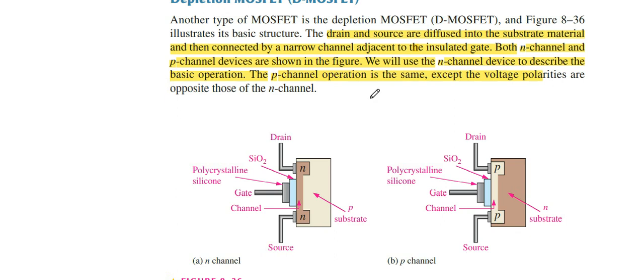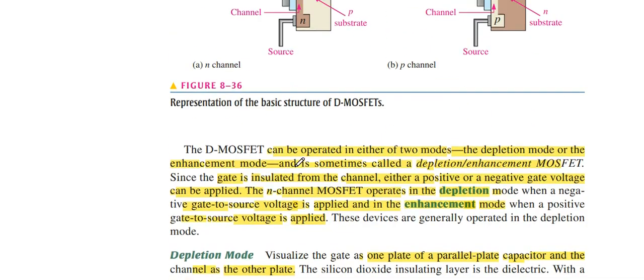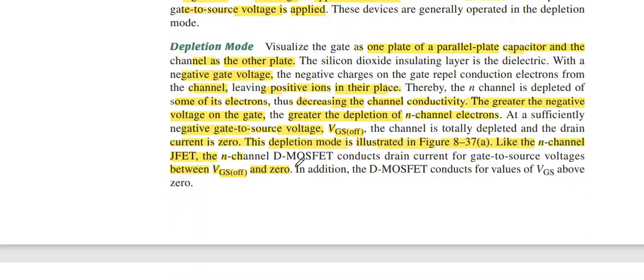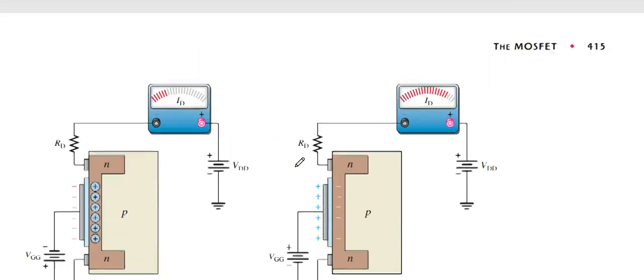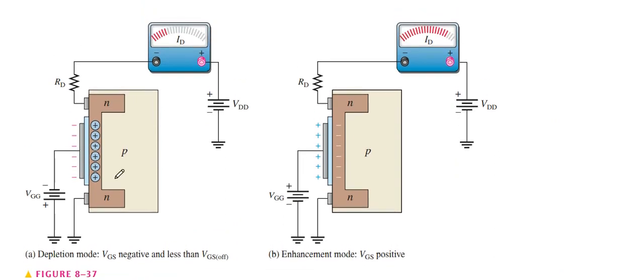N-channel current diffuses or spreads from drain to source or source to drain. How we can operate it in D mode: the gate is negatively connected or VGG. Drain to source is always oppositely biased.